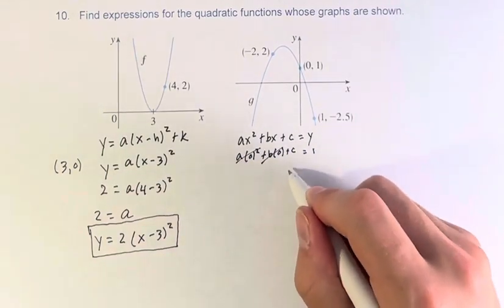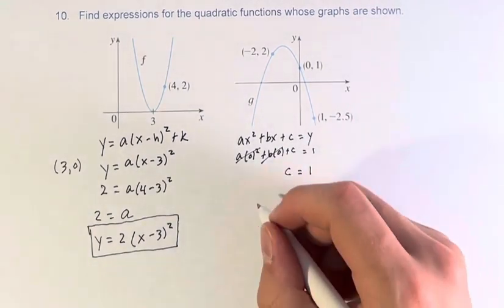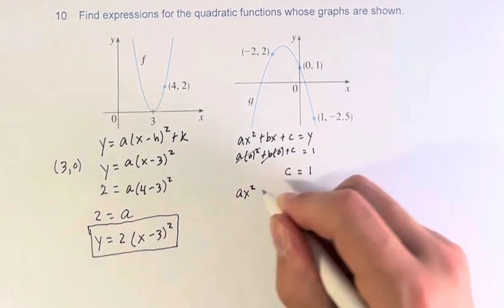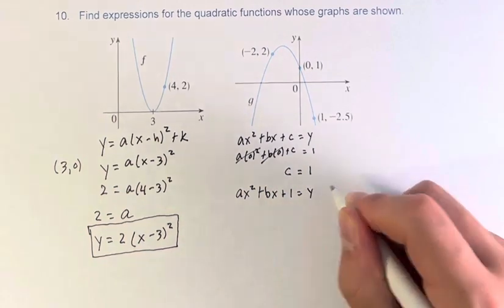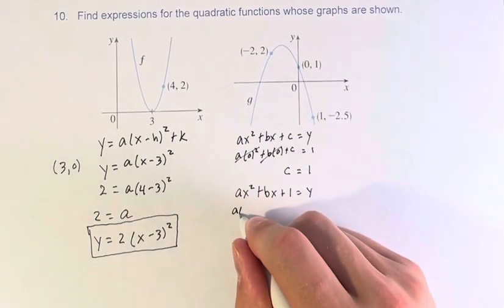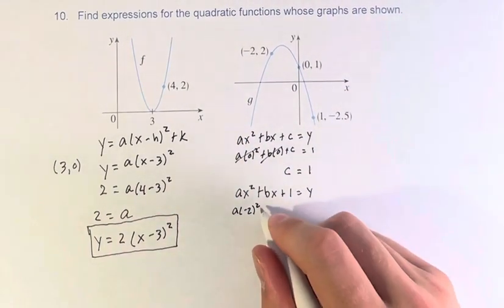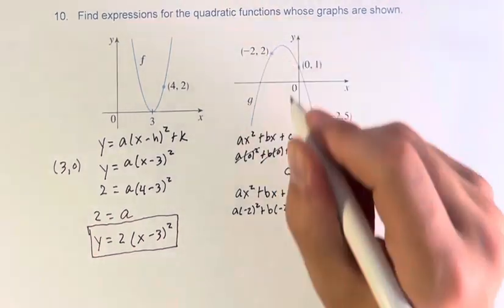0, 0, we're just left with c is equal to 1. So therefore, we know that ax squared plus bx plus 1 is equal to y. And now we can plug in this point. x is negative 2. So a times negative 2 squared plus b times negative 2 plus 1 equals y, which is 2.